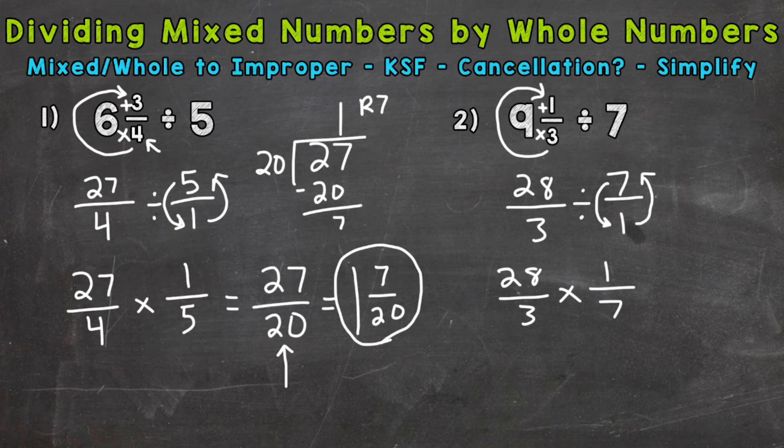Now we're ready to multiply straight across. But in the case of number 2, we can use cancellation. So again, we look for common factors between our numerators and denominators. Think of it as simplifying the problem before multiplying straight across. So for example, 28 and 7 have a common factor of 7. A greatest common factor of 7. So let's divide each of those by 7.